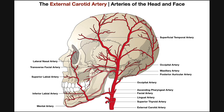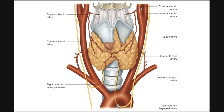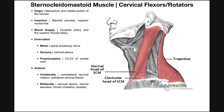The part of the sternocleidomastoid that exists inferiorly is going to receive its blood through the superior thyroid artery. Here's the external carotid artery, and here's the carotid sinus, which is roughly where the common carotid artery bifurcates into the internal and external branches. Pretty quickly after that bifurcation occurs, we can see the superior thyroid artery branching off the external carotid and going inferiorly. It's going to give off some branches toward the sternocleidomastoid, supplying more of the inferior roughly two-thirds of the muscle.